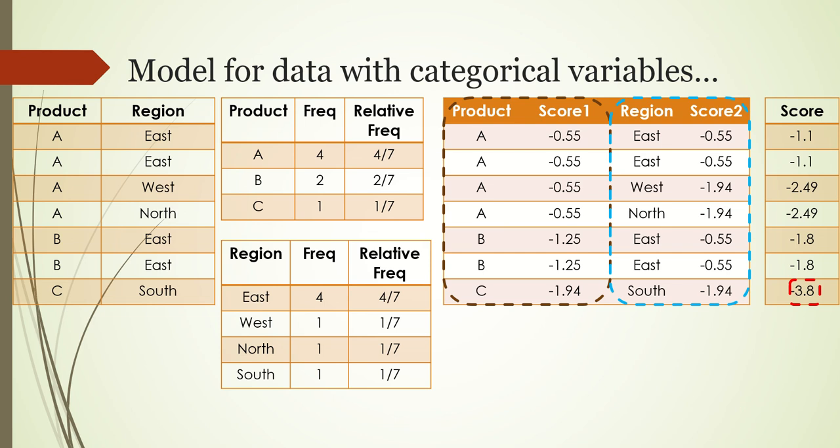The main gist is: no matter how many categorical columns you have, you take each categorical column, create relative frequency, take log of it, and create a score column. You do this for all the categorical columns.